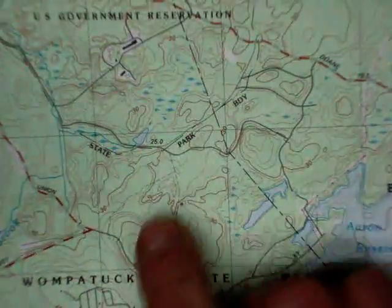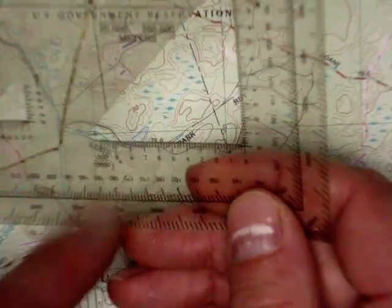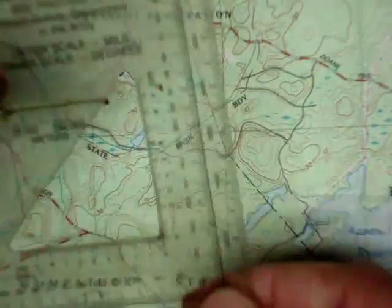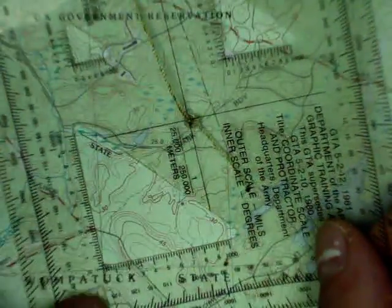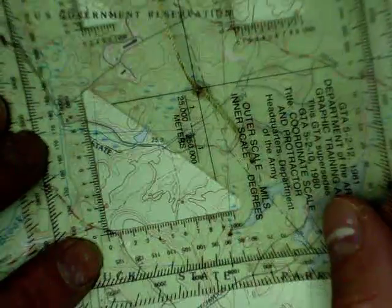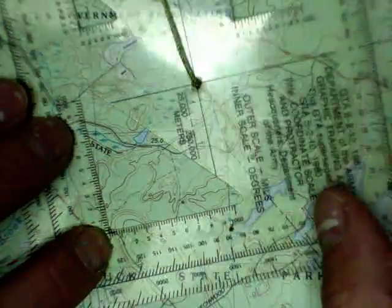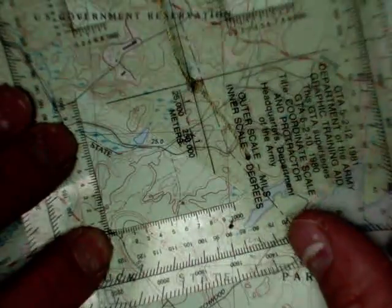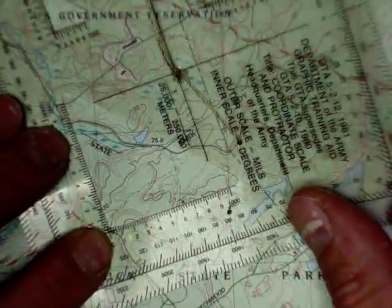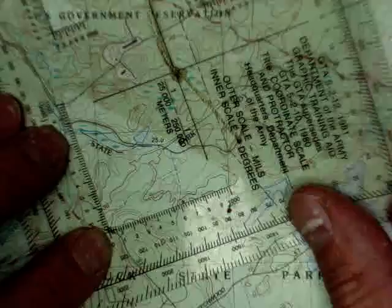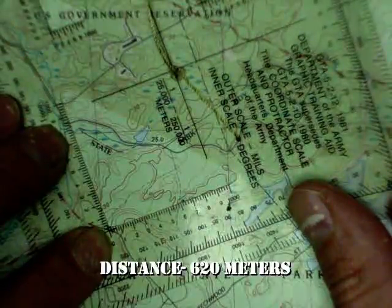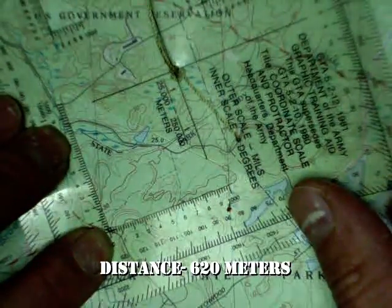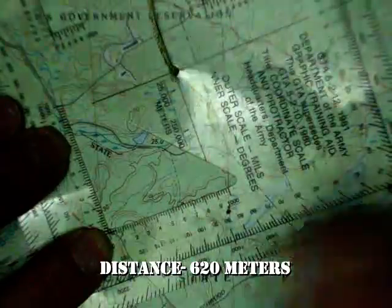Now how far is it? Well, you can use the bottom here of your protractor to find out how far away it is. You put the zero at the junction here. There's our dot, and you slide it. So it is about 600, 20 meters. So that, now we have a distance.